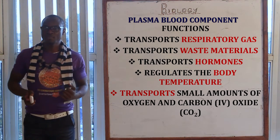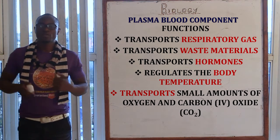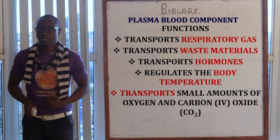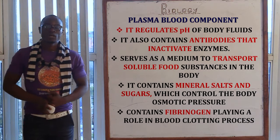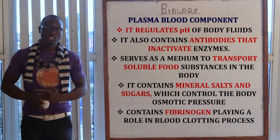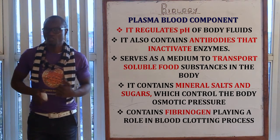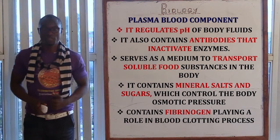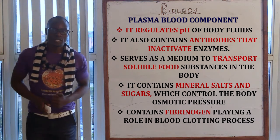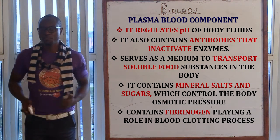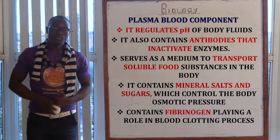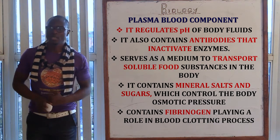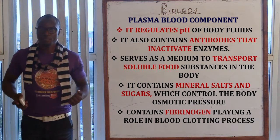The plasma also serves as a transporting medium for small amounts of dissolved gases, that is oxygen and carbon dioxide. The plasma regulates the body temperature through the distribution of heat from the liver and the skeletal muscles to all parts of the body. The plasma also regulates the pH of different body fluids.